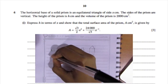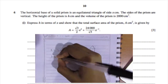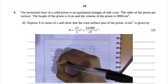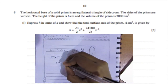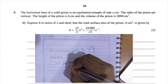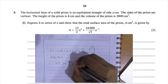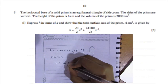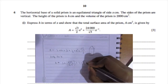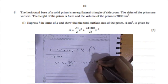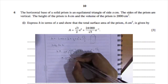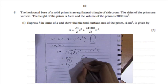Now substitute h = 8000/(√3 · x²) into the surface area formula: A = 3x · [8000/(√3 · x²)] + (√3/2)x², which simplifies to give the formula stated in the question. That's three marks and we're done with the first part.